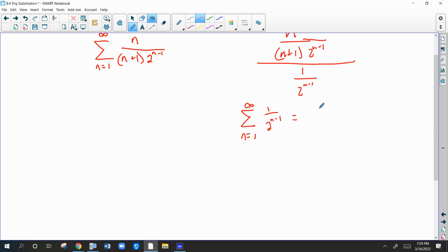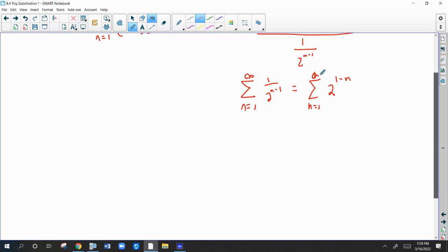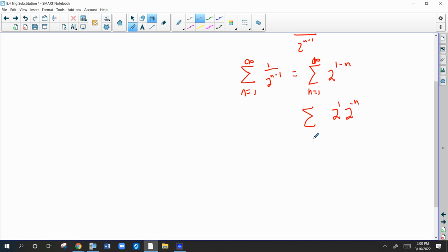So what I'm going to do is I'm going to just bring that 2 up and negate its exponent. That's an infinity. And then by rules of exponents, this would be 2 to the 1st times 2 to the negative n. I want that to be positive n, so why don't we just do this. 2 to the 1st times 1 over 2 to the n. That should do.